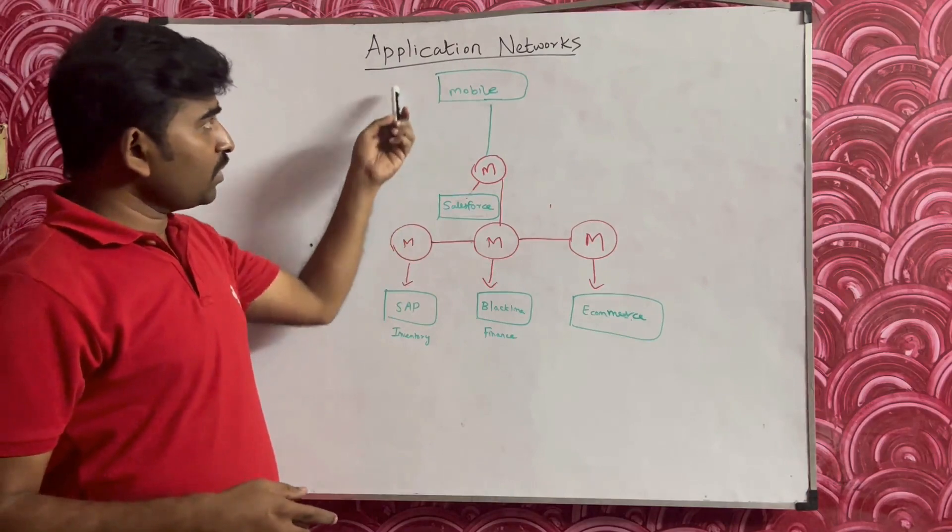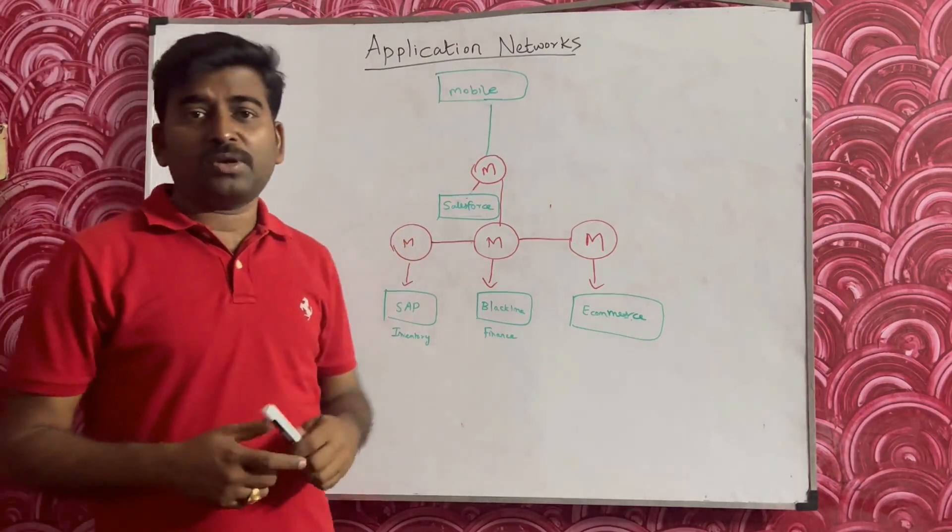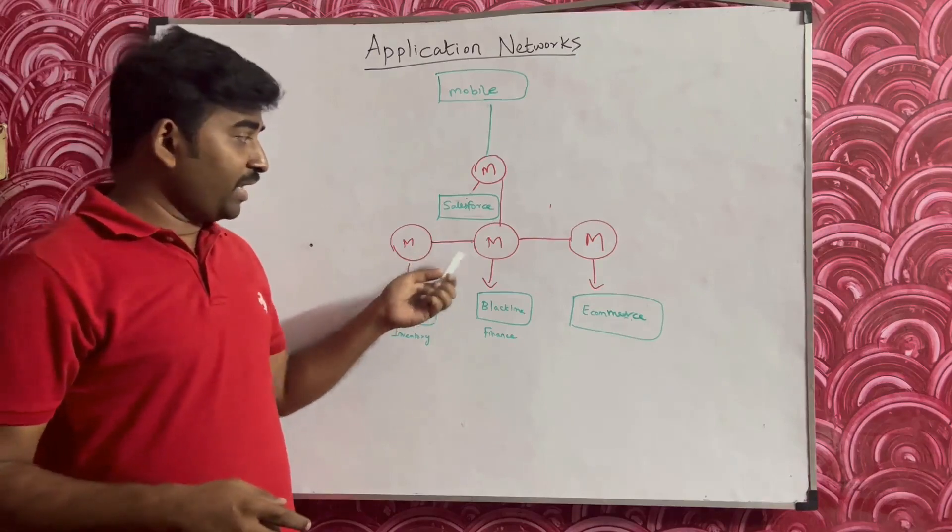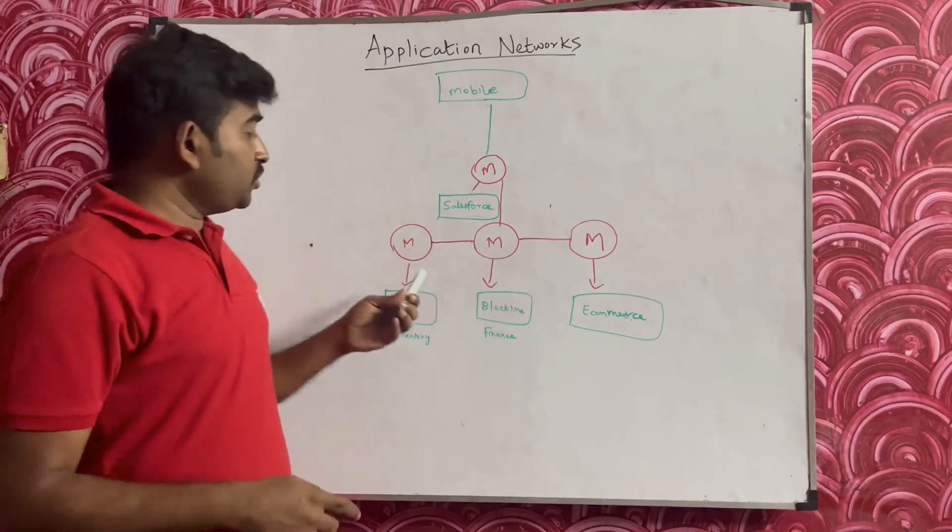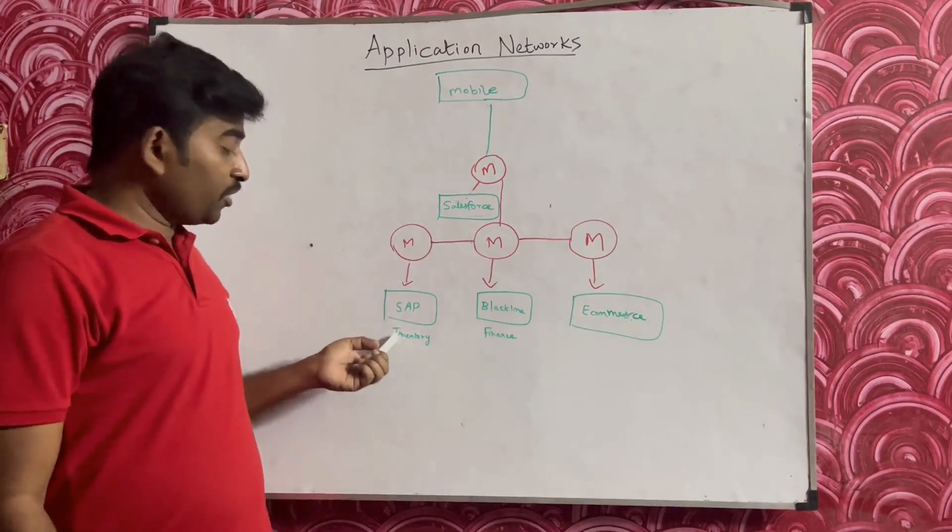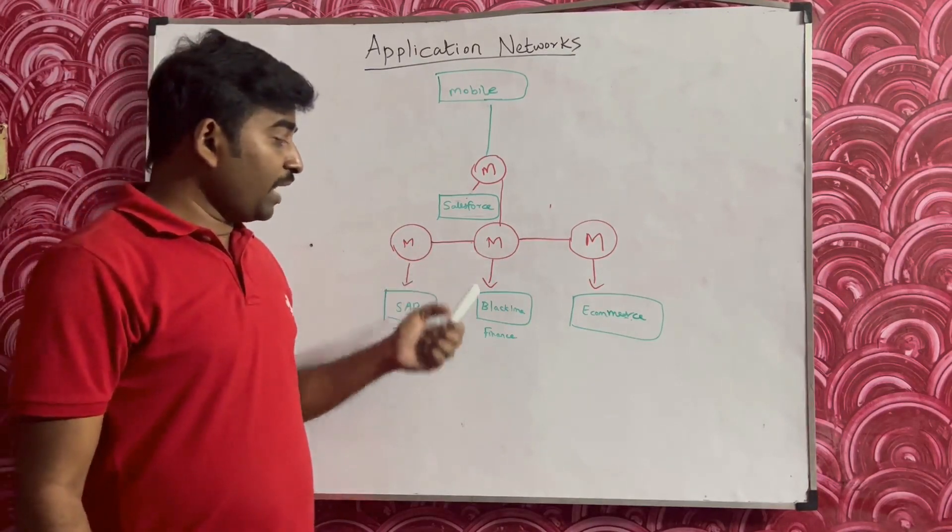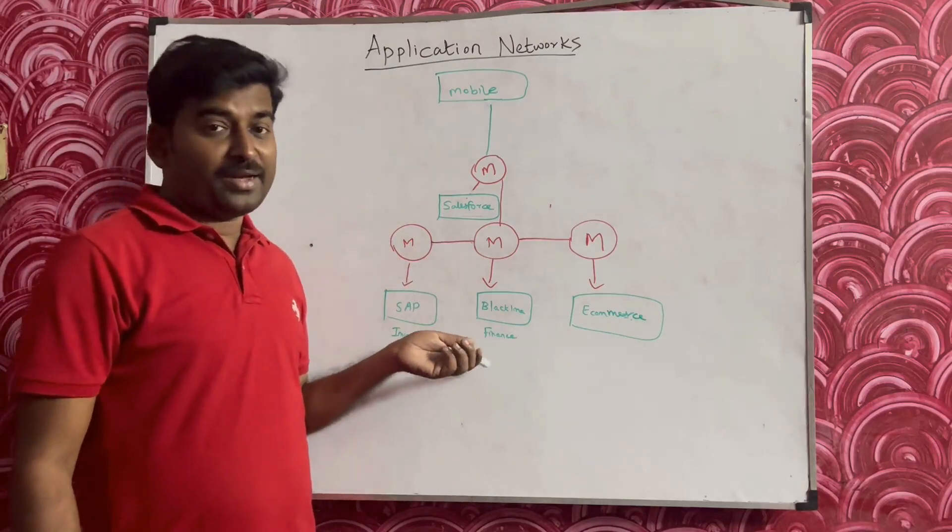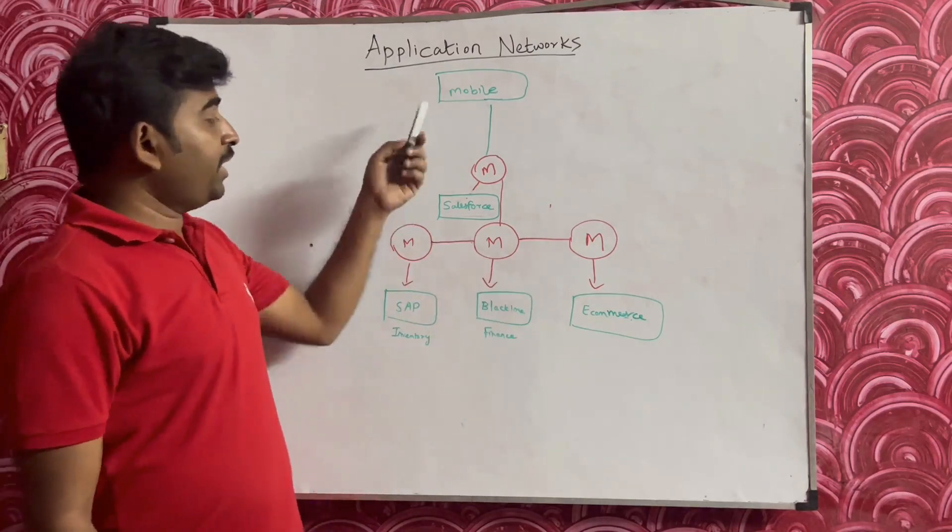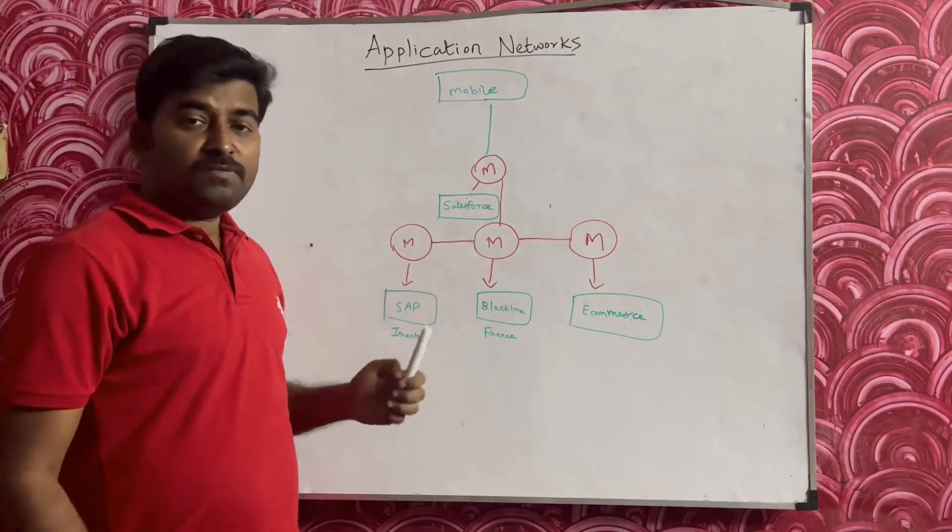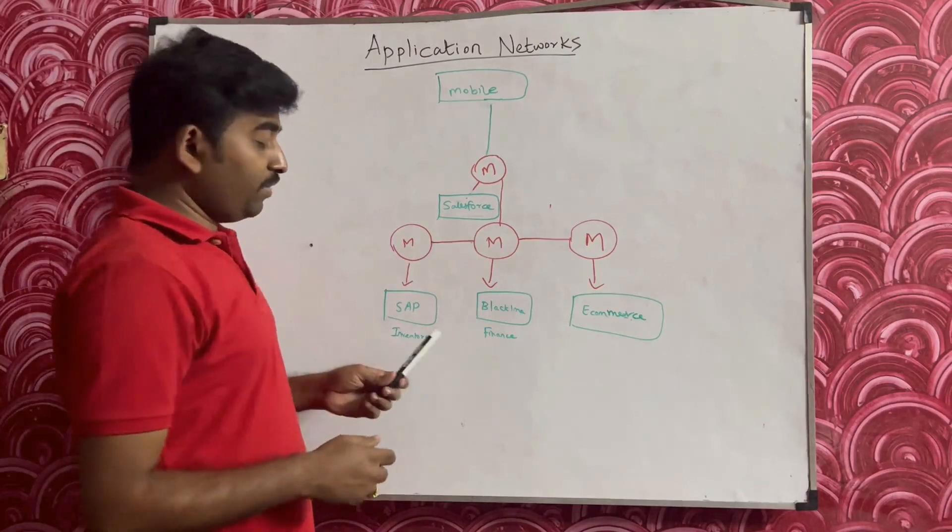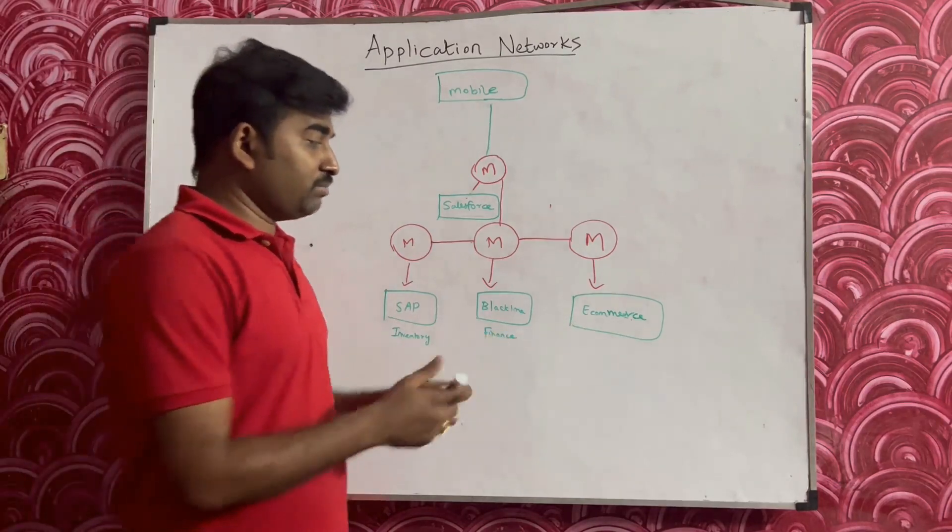How is this term referred in MuleSoft or where is it getting used? Assume you have a MuleApp, so wherever I put M that is a MuleApp which is talking to different applications. For example, this particular MuleApp is talking to SAP to get the inventory data. This MuleApp is connecting to the Blackline application and this MuleApp is connecting to e-commerce application. This is an individual service which can specifically get some specific data - here it is inventory data, finance data, and here it is order data.